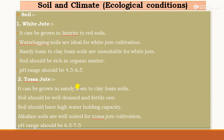For Tossa jute, it can grow in sandy to clay loam soils. The soils should be well-drained and fertile, with high water-holding capacity. Alkaline soils are well suited for Tossa jute cultivation, and the pH range required is 6.5 to 7.5.